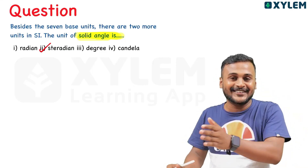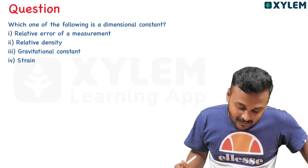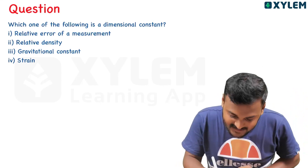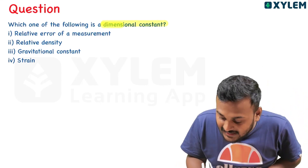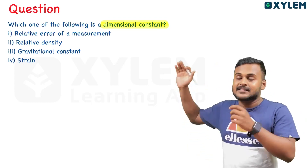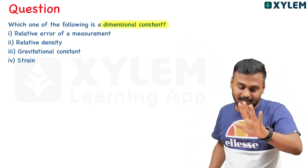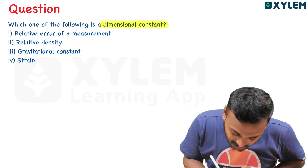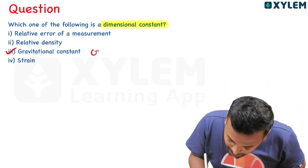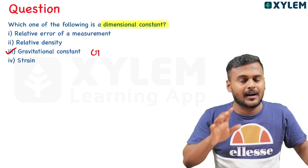We are moving to our next question. Which one of the following is a dimensional constant? What is a dimensional constant?